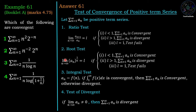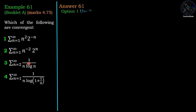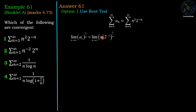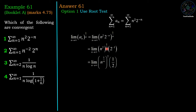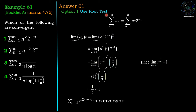We will use these tests to check the convergence of series given in the options. For the first option we will use the root test, where a_n is equal to n squared times 2 power minus n. The nth root of a_n is (n squared times 2 power minus n) power 1 by n. We have n squared power 1 by n and the minus n cancels with 1 by n giving 2 power minus 1. We can rewrite n squared power 1 by n as (n power 1 by n) squared. Using the known limit that n power 1 by n tends to 1 as n tends to infinity, this limit has value 1 by 2, which is less than 1. Therefore by the root test the series is convergent, so the first option gives a convergent series.